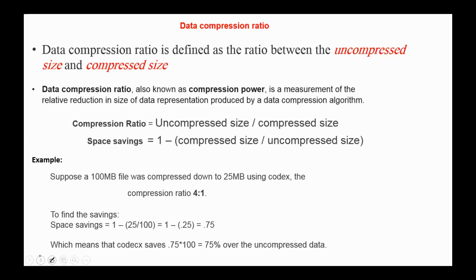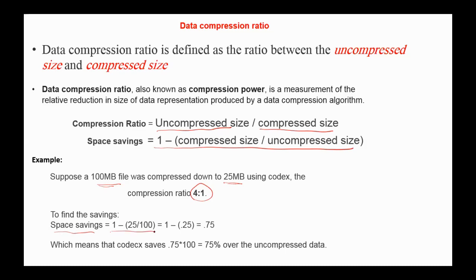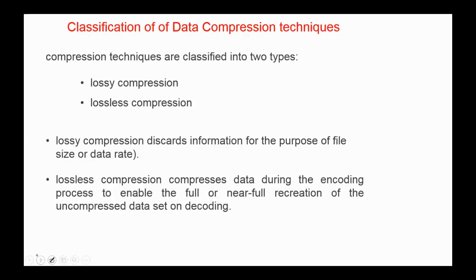Data compression ratio is defined as the ratio between the uncompressed size and the compressed size. It is also known as compression power, and is a measurement of the relative reduction in size of data representation produced by a data compression algorithm. For example, if a 100 megabyte file is compressed down to 25 megabytes, the compression ratio is 4 to 1. The saved space is computed as 1 minus compressed size over uncompressed size, which in this example gives space savings of 75%.